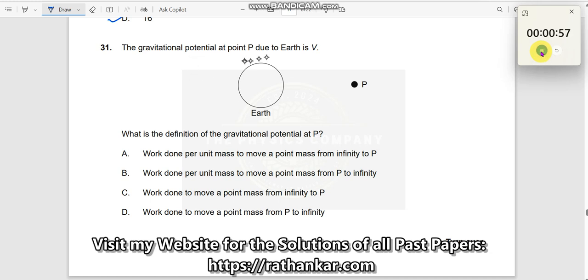Question number 31. The gravitational potential at point P due to Earth is V. What is the definition of the gravitational potential at P? Very simple question, straightforward answer.